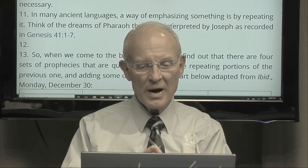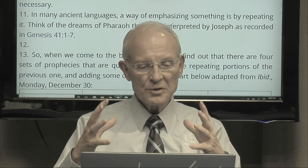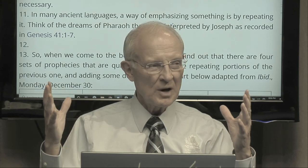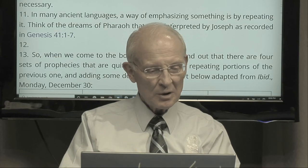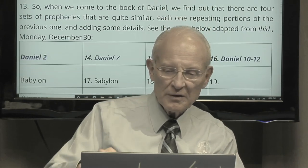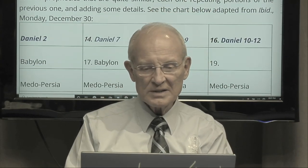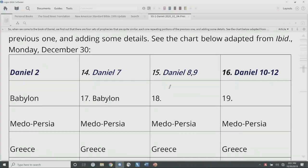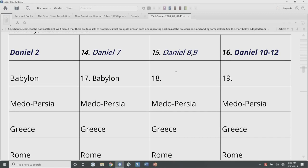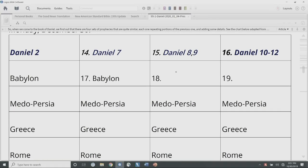In many ancient languages, a way of emphasizing something is by repeating it. Think of the dreams of Pharaoh interpreted by Joseph in Genesis 41 — the cows and the heads of grain, everything doubled. When we come to Daniel, we find four sets of prophecies that are quite similar, each one repeating portions of the previous one and adding some details. We have Daniel 2, Daniel 7, Daniel 8 and 9, and Daniel 10 through 12 — those are the four major prophecies in the book of Daniel. Our handouts are available at Theox.org.